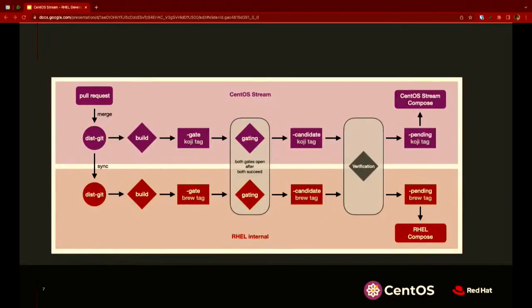Here's a diagram of how things work. The Bugzilla happens first, but we've switched RHEL maintainers to a merge request workflow to affect the changes going into the next minor release. Up top here is the CentOS Stream infrastructure — the code repositories and build system — which is parallel to what happens internally. There are a number of processes in place to keep them in sync.